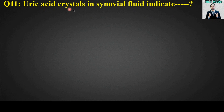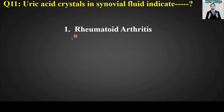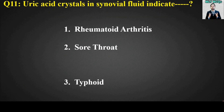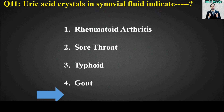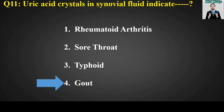Last MCQ: Uric acid crystals in synovial fluid indicate blank. Options are: rheumatoid arthritis, sore throat, typhoid, or gout. The right answer for this MCQ is option number four — uric acid crystals in synovial fluid indicate gout.